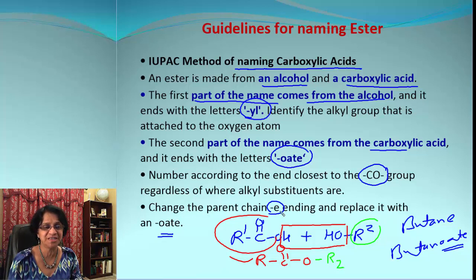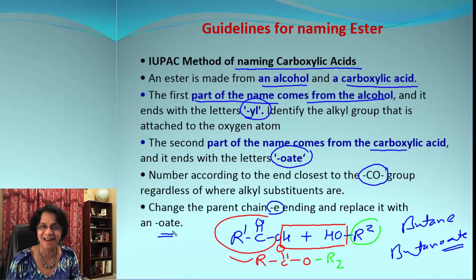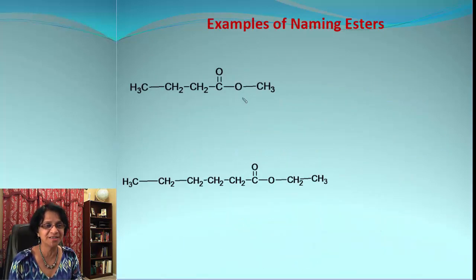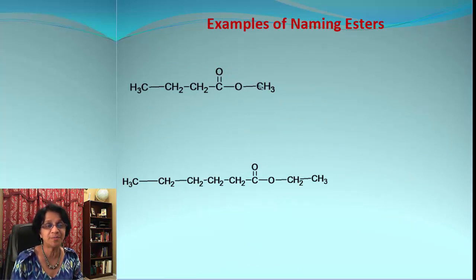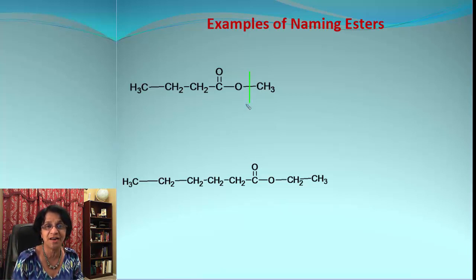The last thing is the parent chain ending in '-e' should be changed to end with '-oate', like methanoate, ethanoate, and so on. Let's work on this first example — you can always break up an ester into two parts.